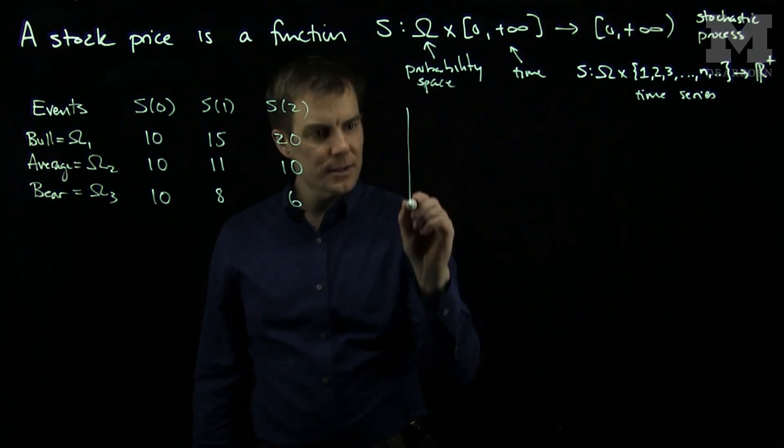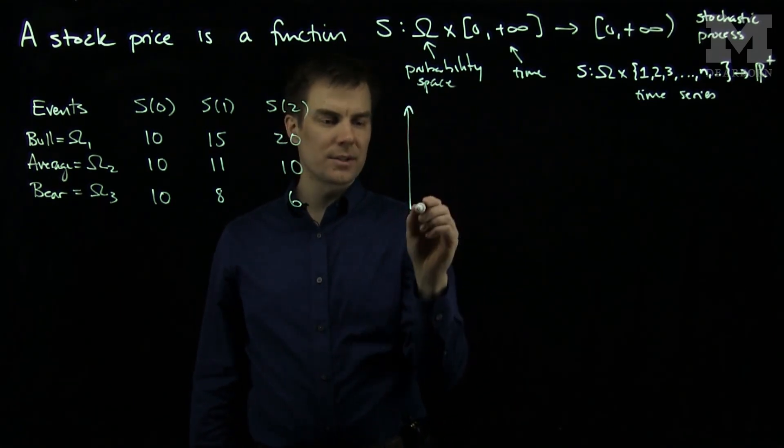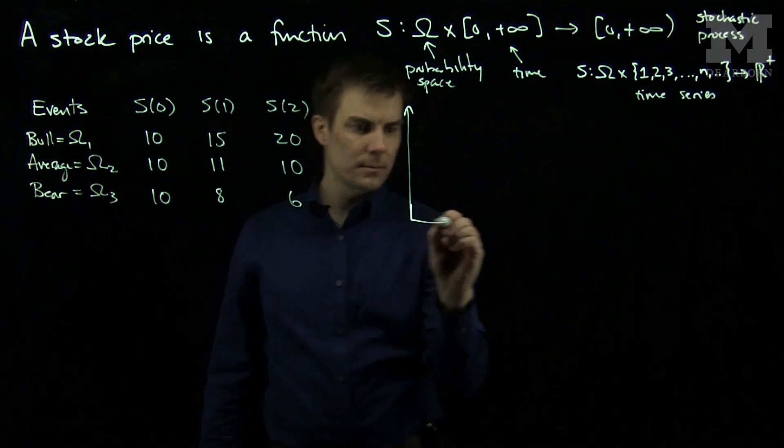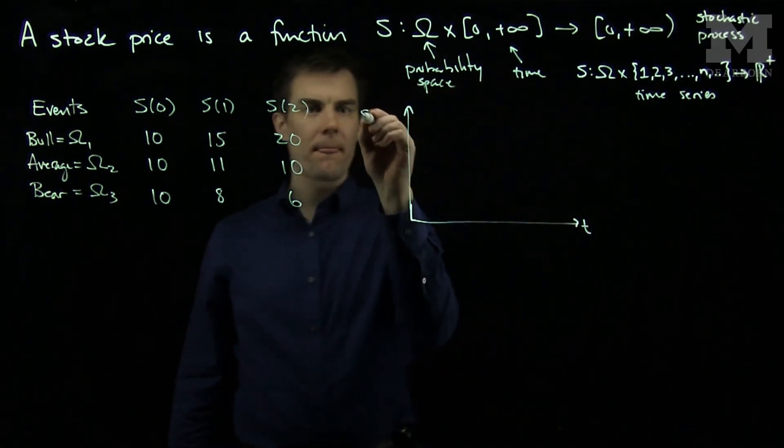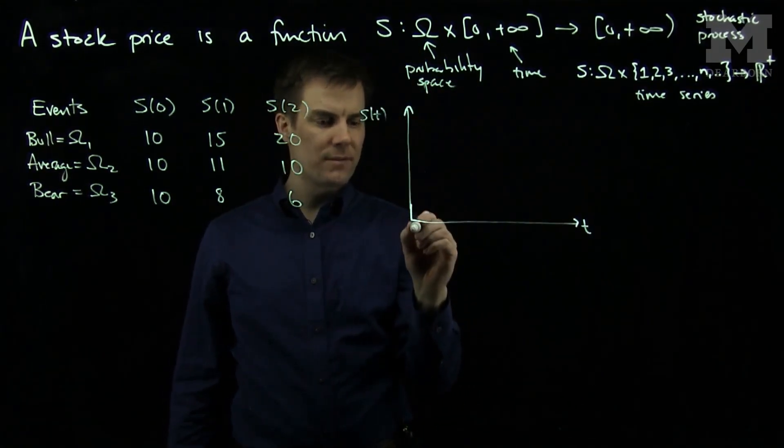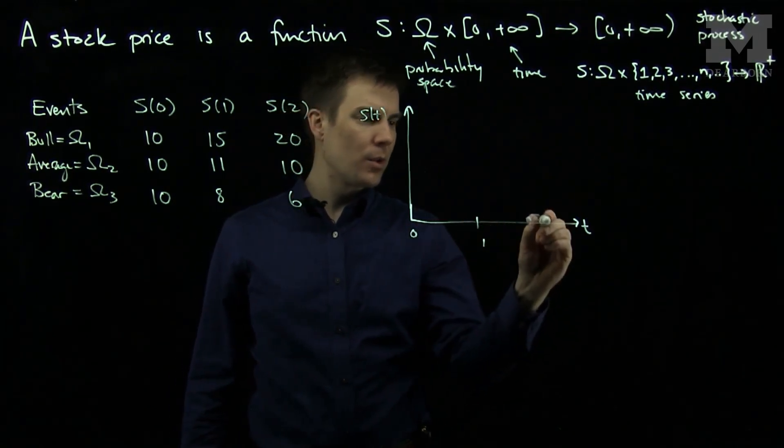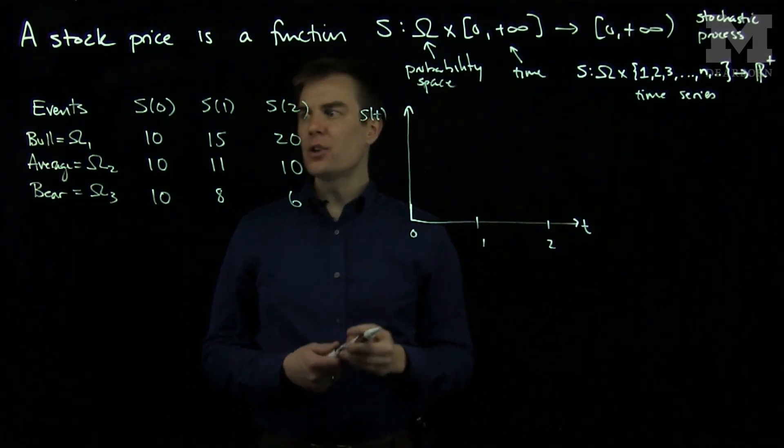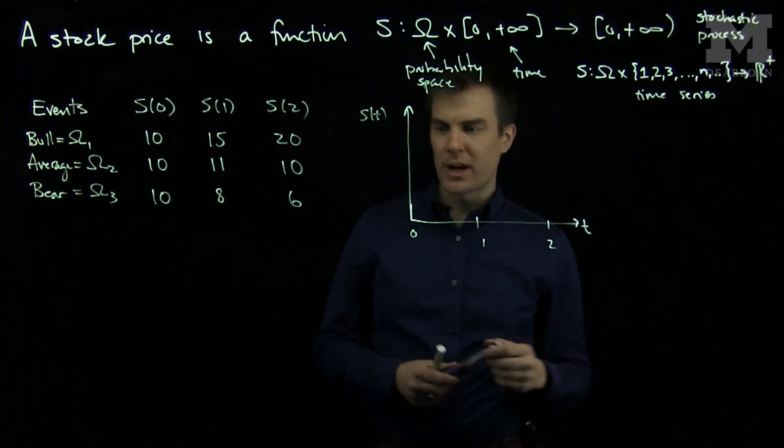So now I can plot the stock price versus time. And we'll have time zero, time one, and time two. And for each of these values omega, I will get a different trajectory.